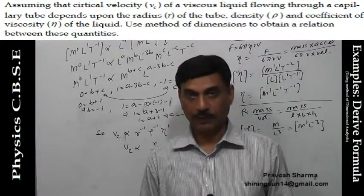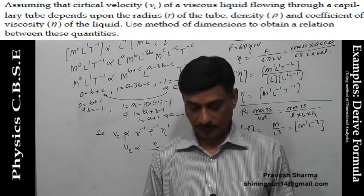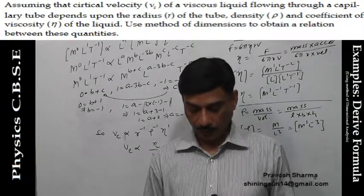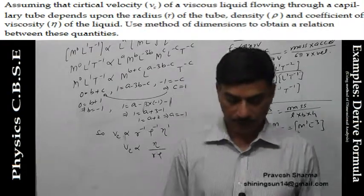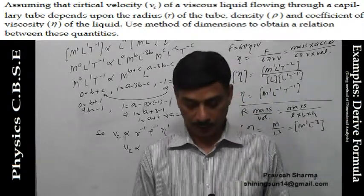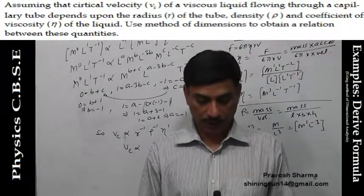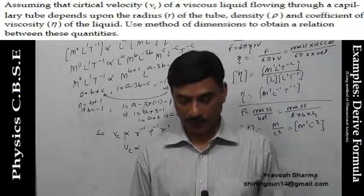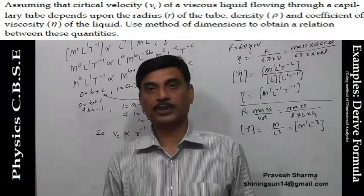Assuming that critical velocity Vc of a viscous liquid flowing through a capillary tube depends on radius r of the tube, density rho, and coefficient of viscosity eta of the liquid, use method of dimensions to obtain a relationship between these quantities.